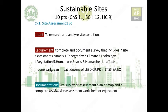Credit 1 is Site Assessment — just one point to research and analyze site conditions. If you complete and document a survey covering seven assessments — topography, climate, hydrology, and so on — and it is done as early as possible, ideally in the pre-design process, it can impact dozens of LEED credits. Prerequisites like Location and Transportation, some Sustainable Sites credits, and even Energy and Atmosphere and Environmental Quality credits may be affected.